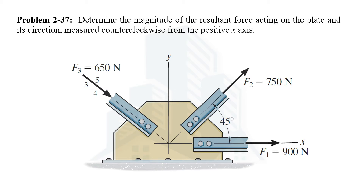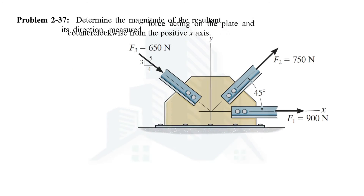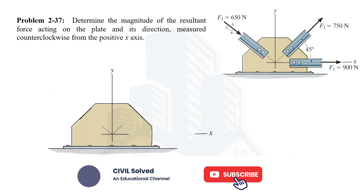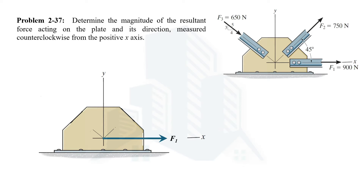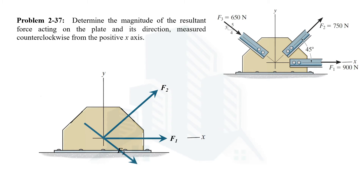In this example we have been asked to determine the resultant force acting on the plate and also determine the direction measured counterclockwise from the positive x-axis. We have three forces acting on the plate: F1 making zero degrees with the positive x-axis, F2 making 45 degrees with the positive x-axis, and F3 of magnitude 650 N acting downward, for which we are given the sides of a right-angle triangle instead of a direct angle. We can shift F3 along its line of action.